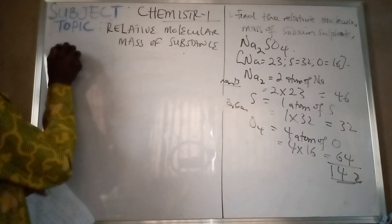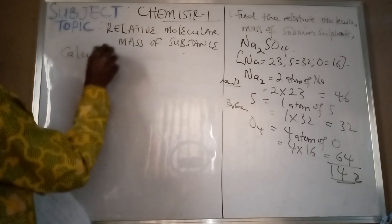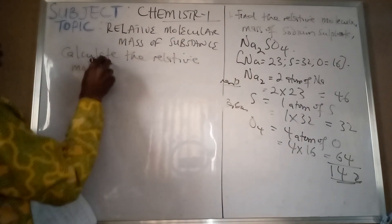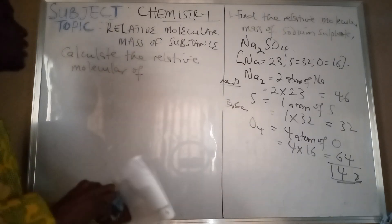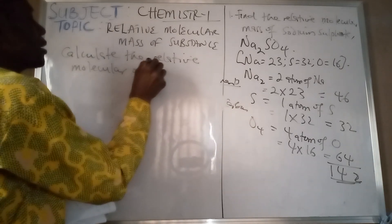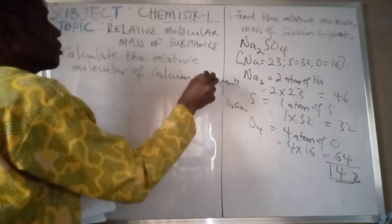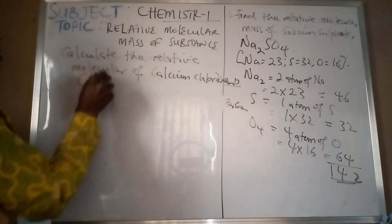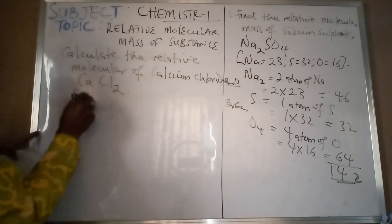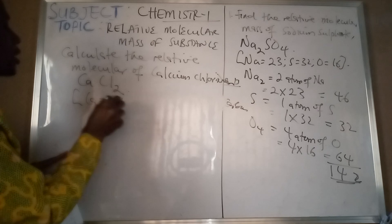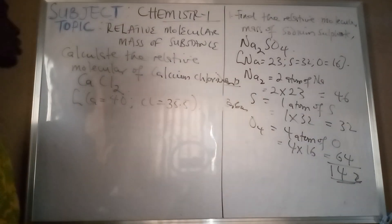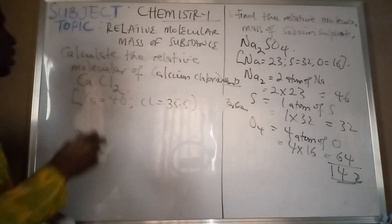Now look at another question. We are being told to calculate the relative molecular mass, or formula mass, of calcium chloride. The formula for calcium chloride is CaCl2. The given relative atomic masses are: calcium is 40, and chlorine is 35.5.